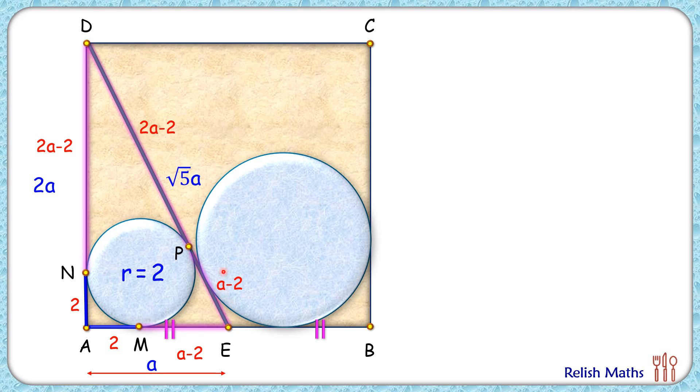Comparing the length of DE: DE length is 2a - 2 plus a - 2, and it also equals √5a. Now simplifying this, we'll get this equation. Solving it to get the value of a as 4 upon 3 - √5. Rationalizing the denominator will get the value of a as 3 + √5 centimeters.